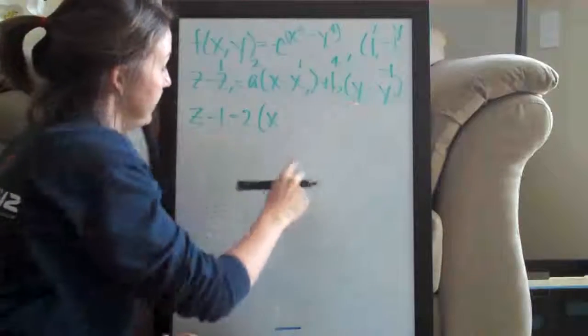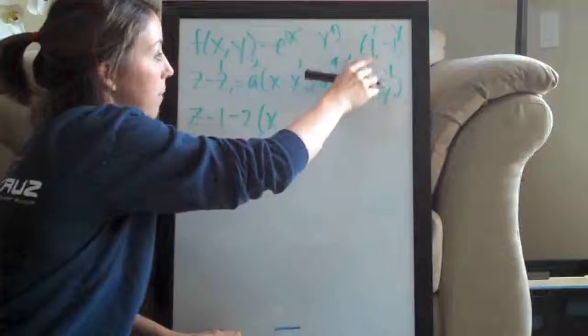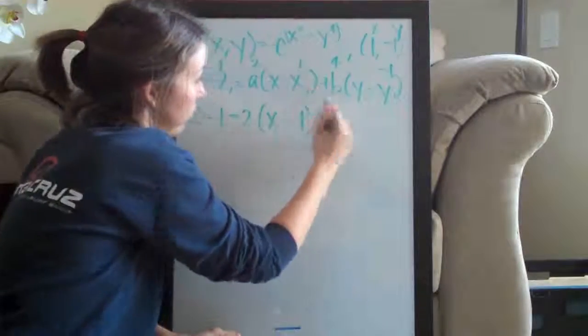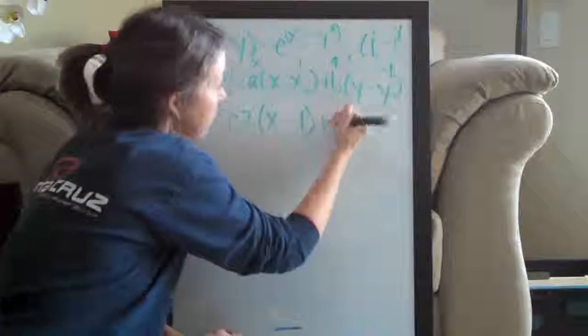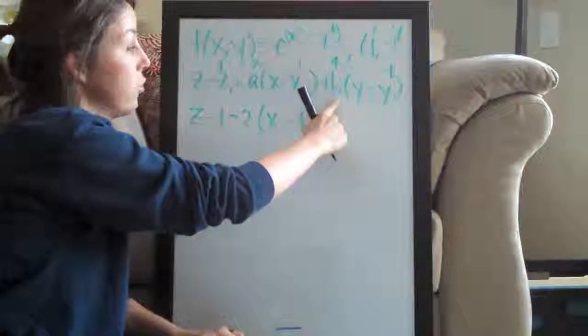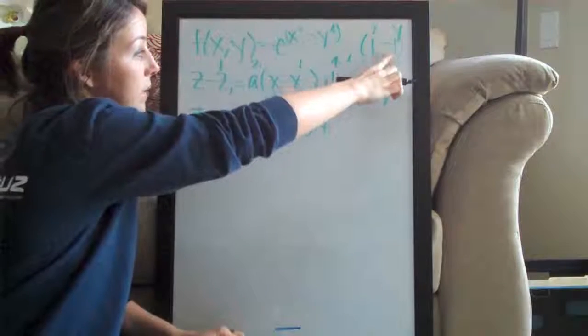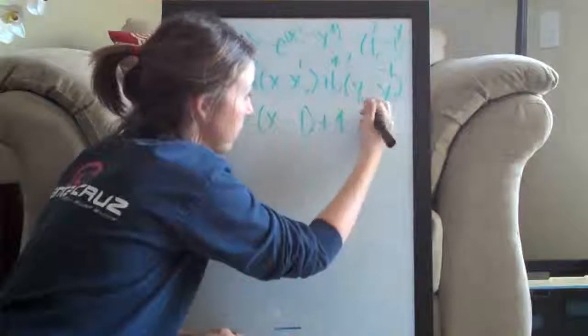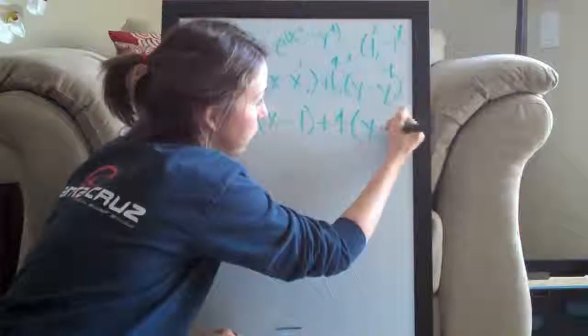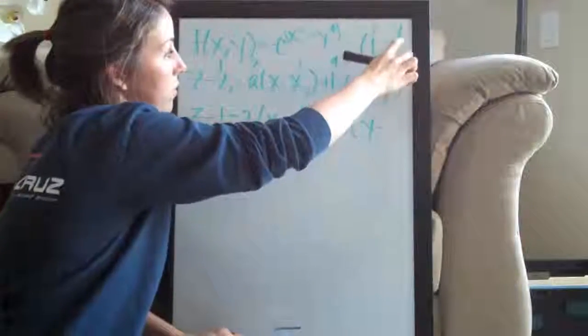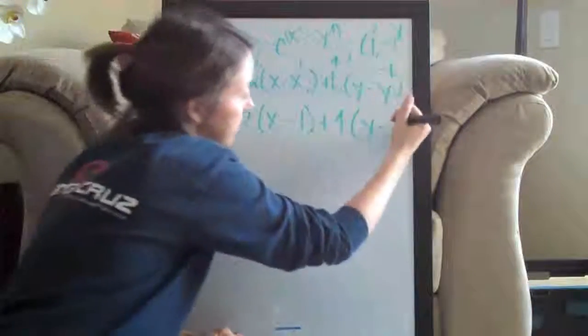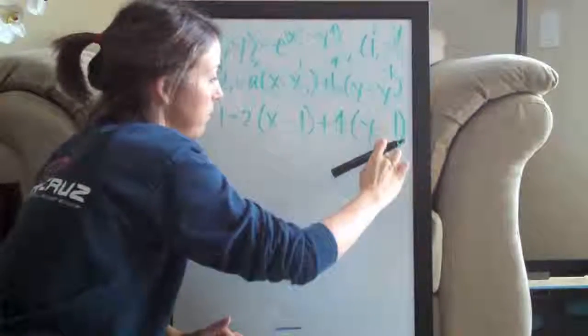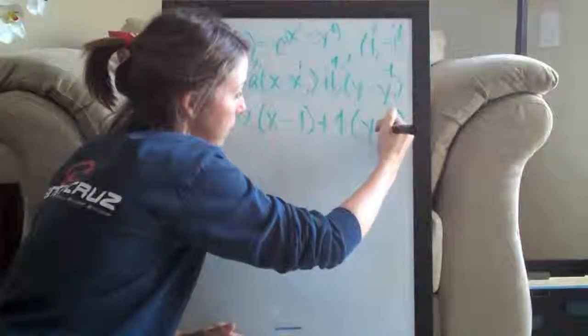So x, the point that we were given, the x term is 1 plus we took the partial derivative with respect to y and plugged in the point 1 negative 1 and we got 4 for b here. We're leaving y alone and our y point here is negative 1. So we would have minus negative 1 but of course that is a plus 1. So let's just go ahead and write plus.